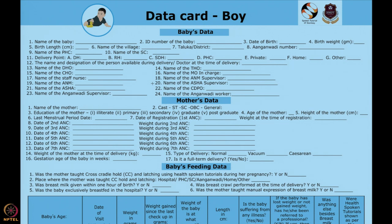How to collect this data and the learning action protocol — name of the baby is important. ID number of the baby, whatever it may be. Many programs write Aadhaar card, but it all depends. Date of birth, birth weight — birth weight should be in grams. Birth length is in centimeters.